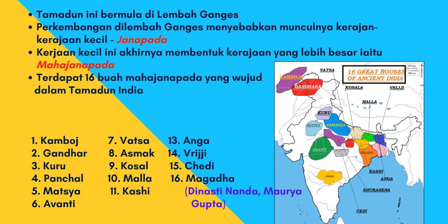Di sekitar sungai-sungai itu wujudlah kerajaan-kerajaan yang kecil, atau nama lainnya ialah Janapada - kerajaan kecil Janapada. Kerajaan-kerajaan ini selepas itu telah membentuk kerajaan yang lebih besar, dan akhirnya menjadi Maha Janapada. 'Maha' ni maksud besar dalam bahasa Sanskrit - kita pun menggunakan perkataan maha, macam Maha Agung, Maha Besar. Jadi Maha Janapada maksudnya kerajaan yang besar.